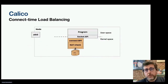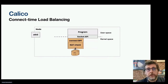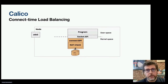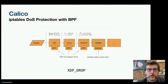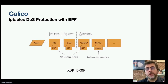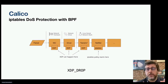The BPF data plane also provides connect-time load balancing using BPF. When there's an incoming connection to a Kubernetes service, Calico will intercept it and reconfigure the socket to connect directly to the backing pod's IP address, removing all NAT overhead from service connections. BPF is also used in the standard IP tables data plane, making use of the XDP program type to provide denial-of-service mitigation.